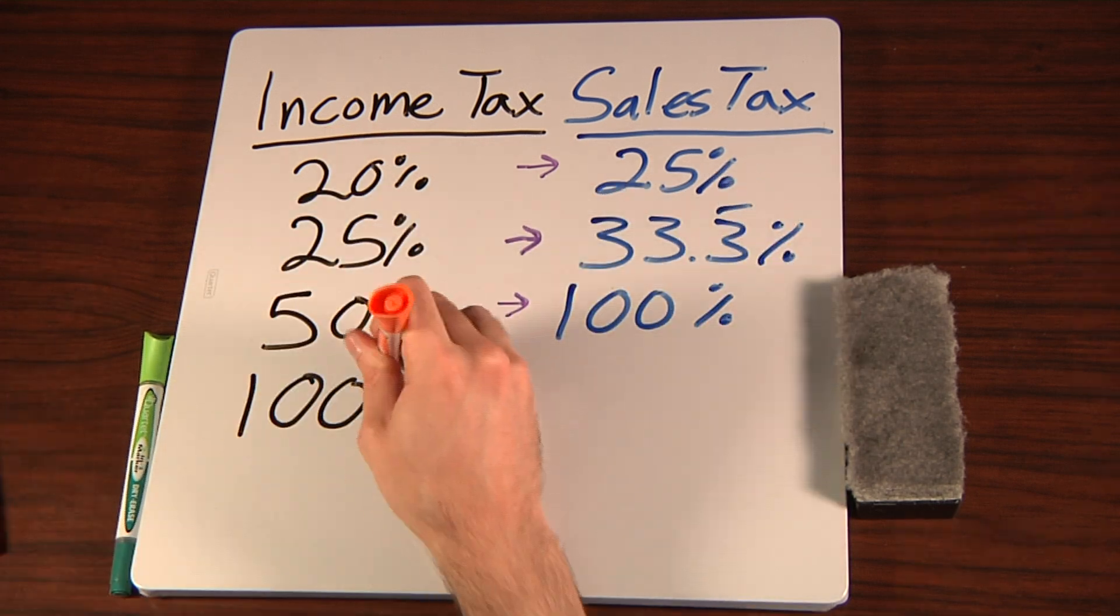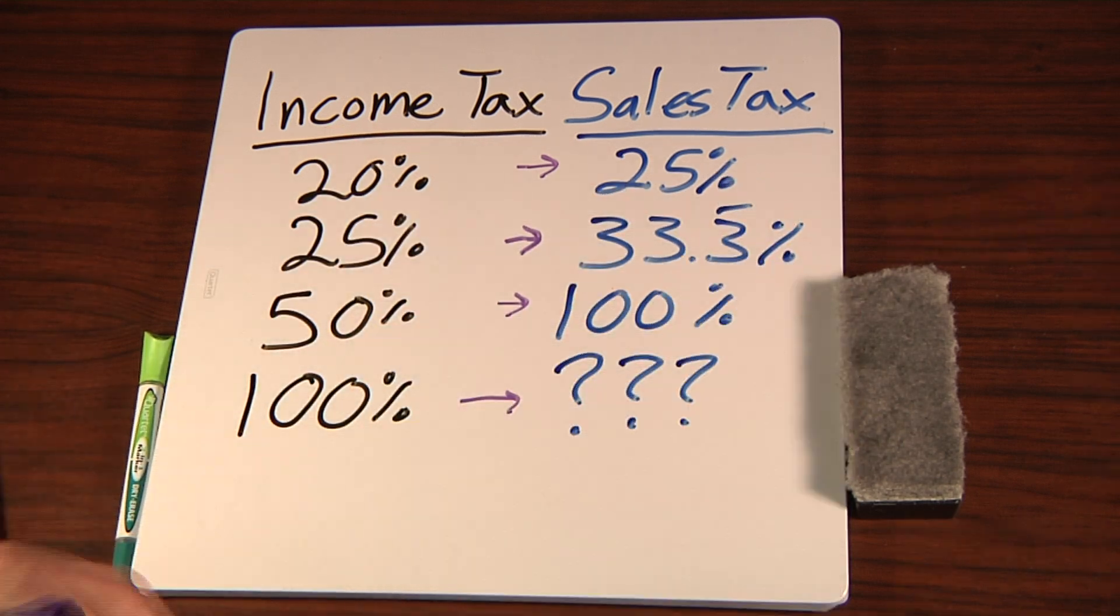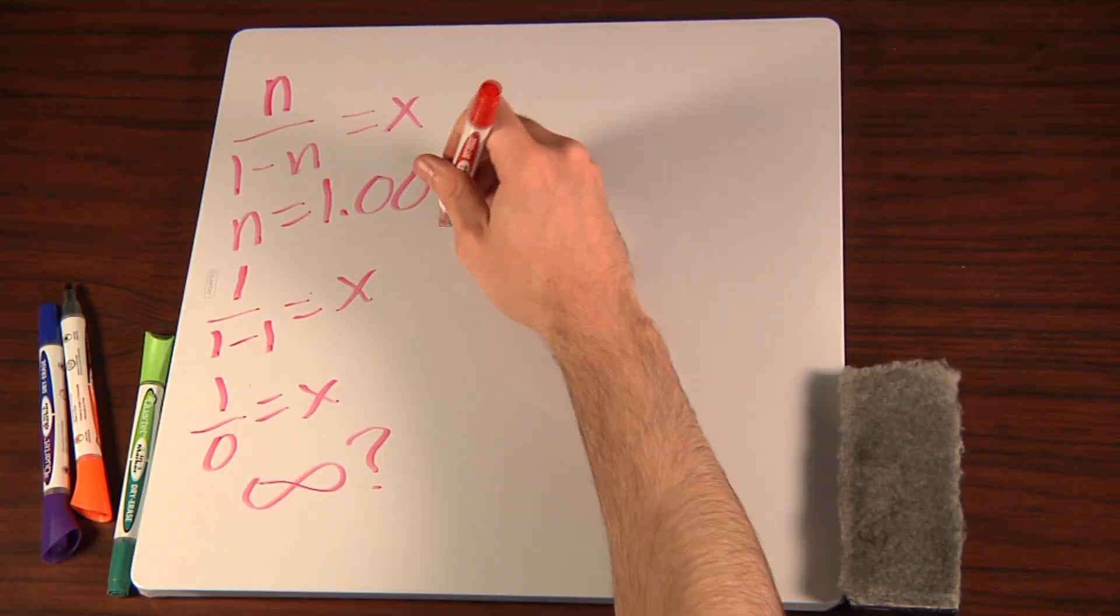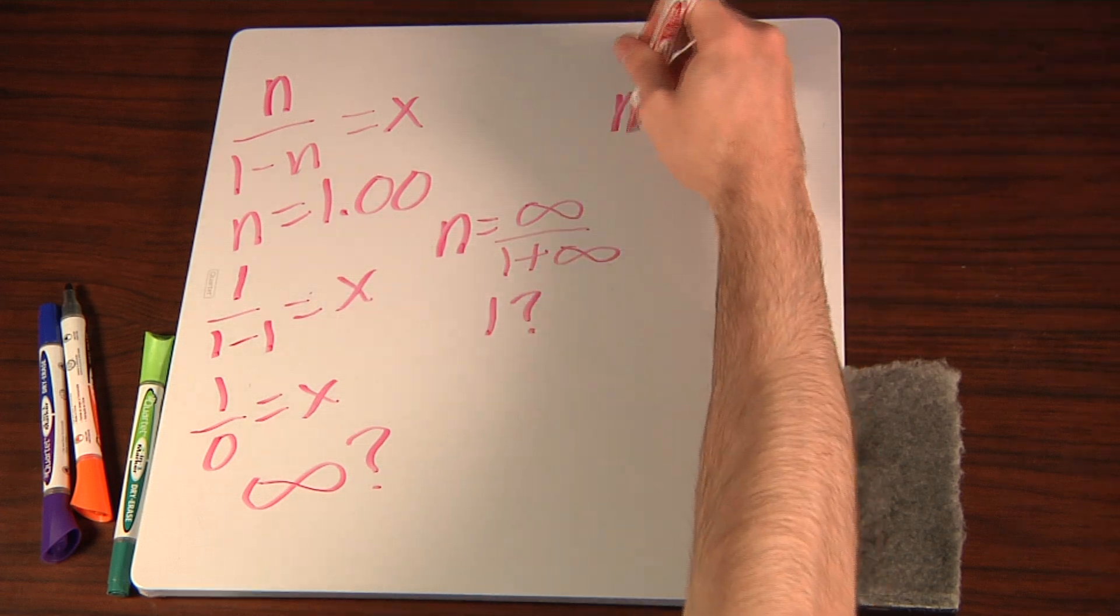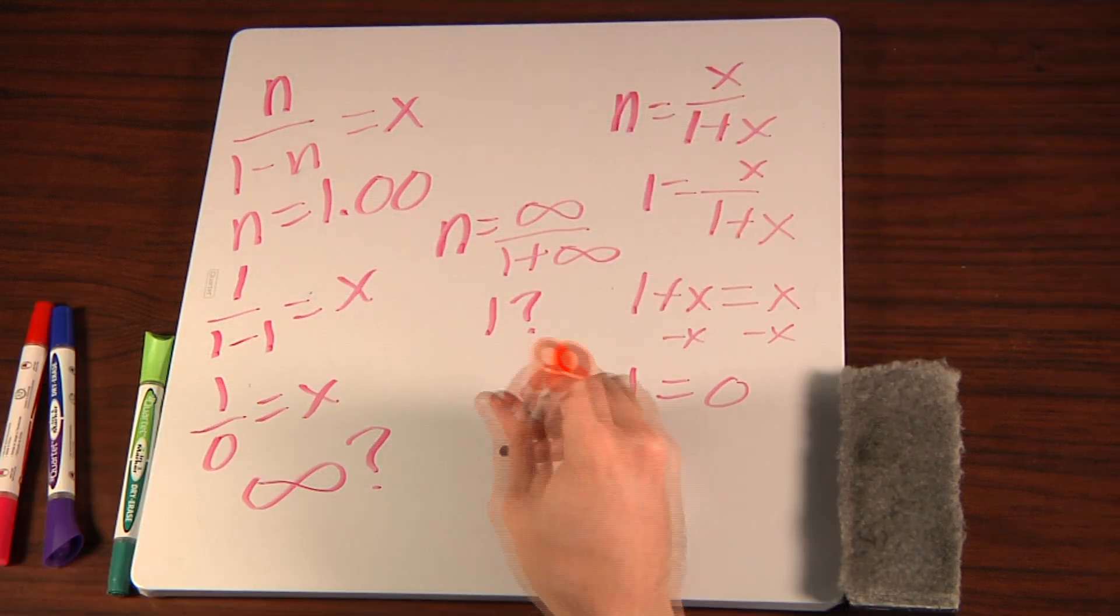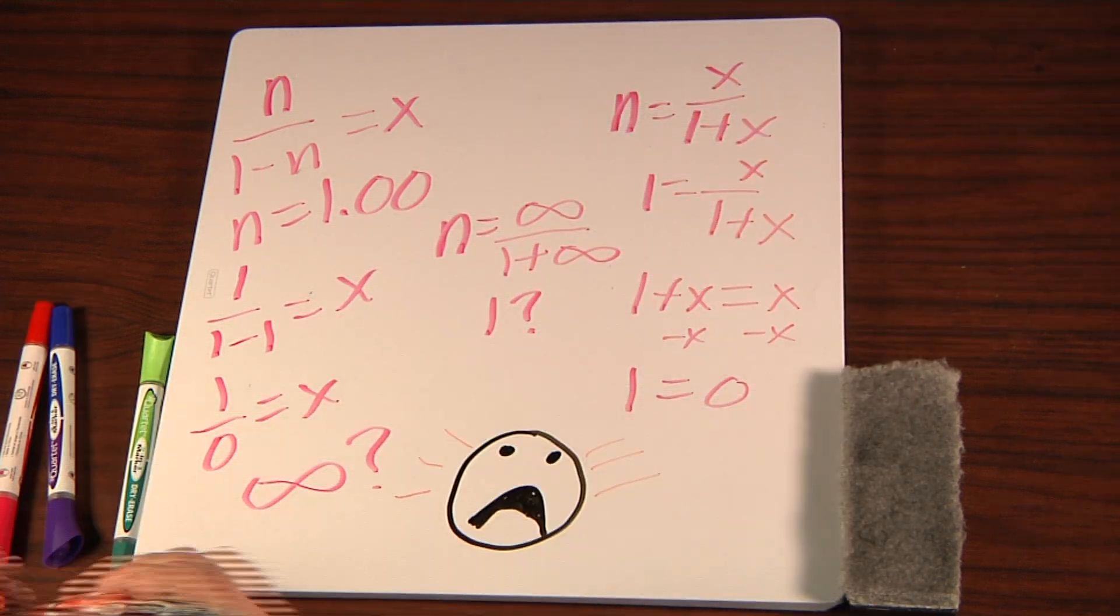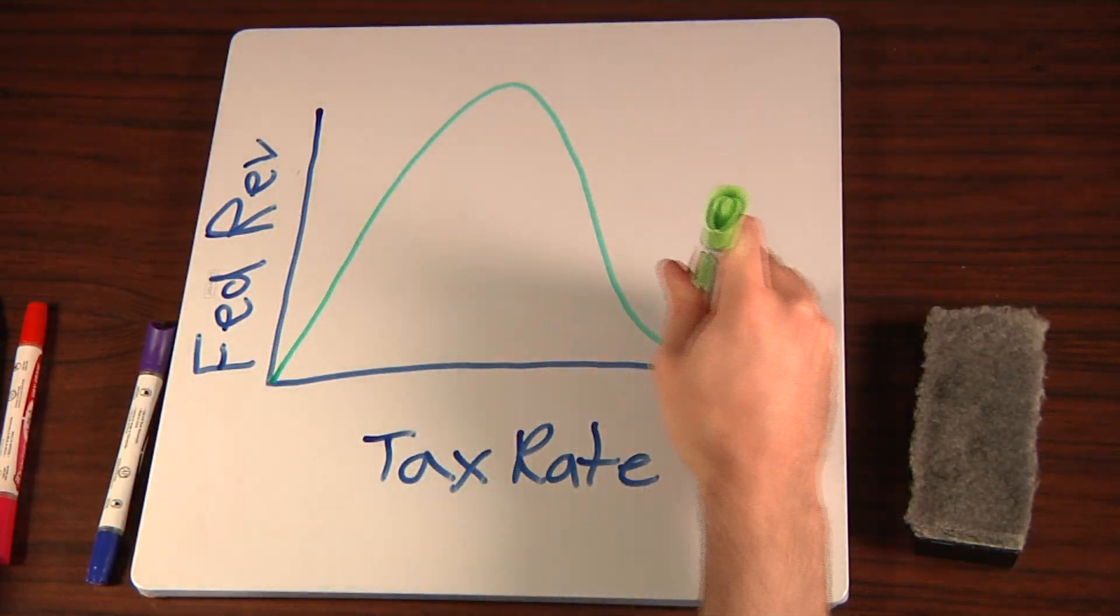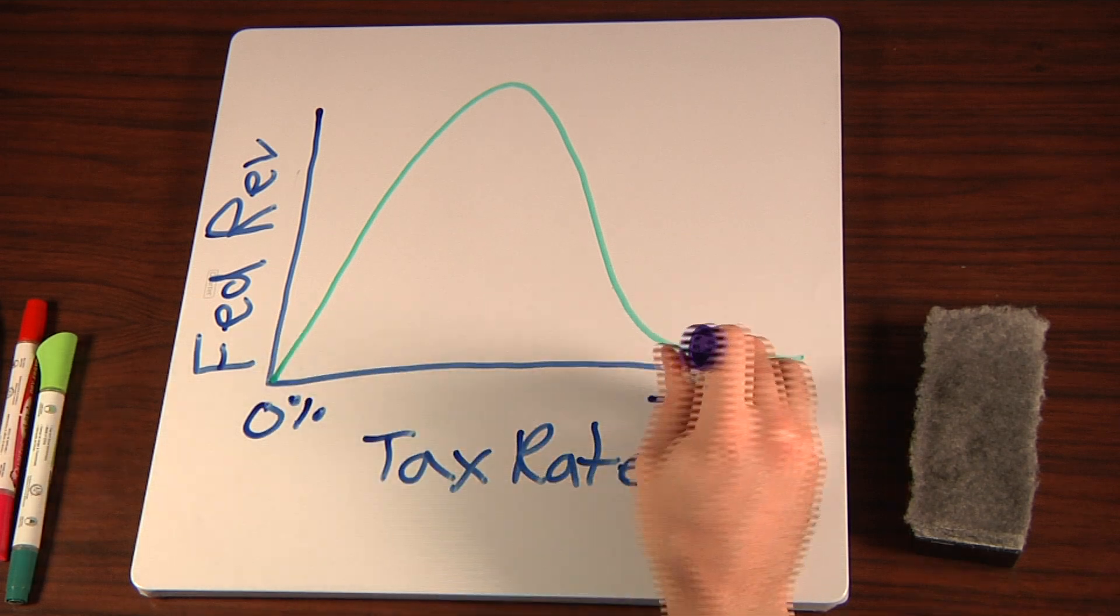But what would be the exclusive equivalent to a 100% inclusive rate? Using the formulas shows that the exclusive rate approaches infinity percent, as the inclusive rate gets closer to 100%. But just plugging in the numbers produces some fuzzy math. Anyway, we now have this awesome tax-exclusive-based Laffer curve.